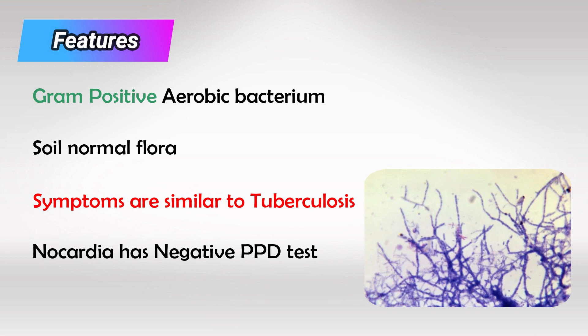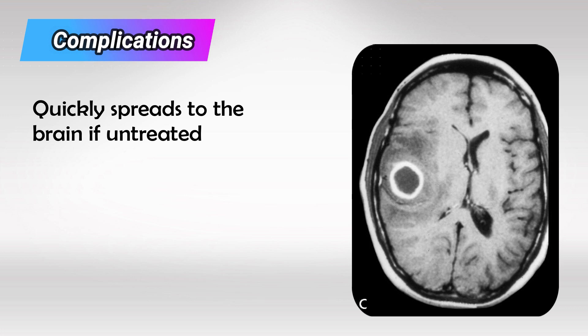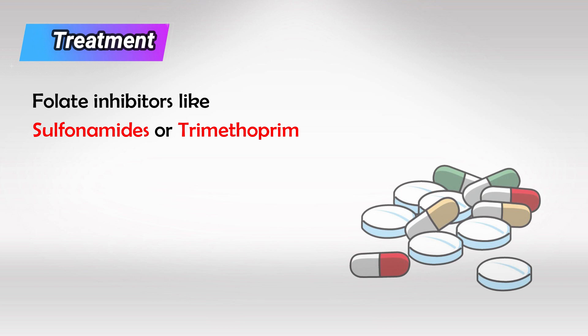If untreated, Nocardia can spread to the CNS very quickly, especially in immunocompromised patients, and this appears as a ring-enhanced lesion. To treat it we simply use folate inhibitors like sulfonamide or trimethoprim.